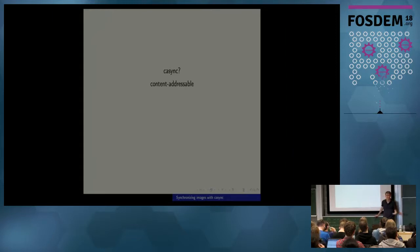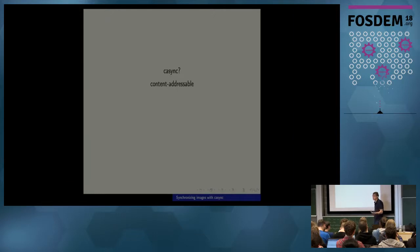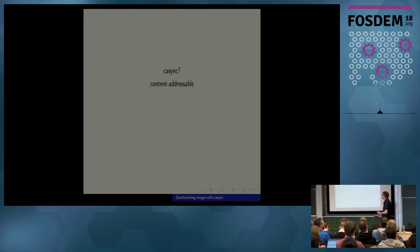Everybody knows those, like Git — everybody probably plays around with Git every day. Content-addressable file systems are these things where you have hashes and they refer to objects, and then you can use these hashes in place of the objects and build trees and these kinds of things.